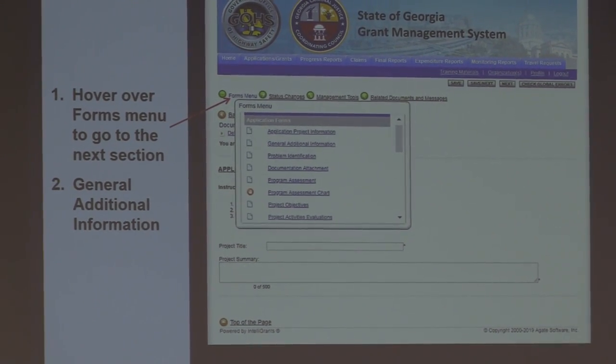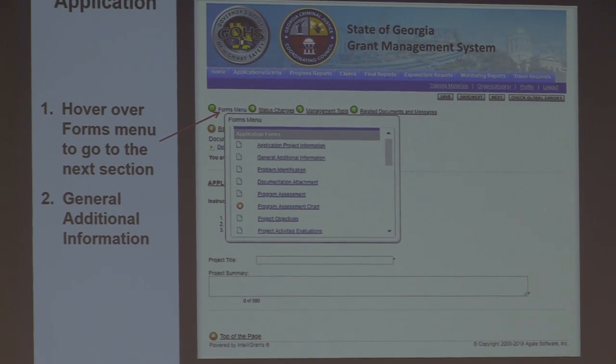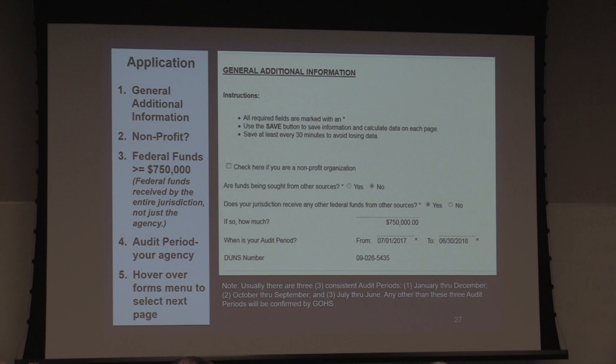Go back to the top of the page where it says Forms Menu — drop down. This is the general information page. If you are a non-profit organization, you need to click that box. If there are federal funds being sought for this project from someone else, you need to click yes; if not, click no. Majority of our grants are no. Then where it says, does your jurisdiction receive any other federal funds or sources?